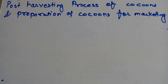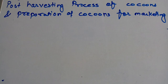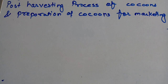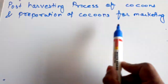Welcome students. In the last few videos we discussed about the different types of diseases which are caused to the silkworm larva. We also discussed about the life cycle, and for getting silk we are interested in the third stage, that is the pupal case of the silkworm. From this video, we start to study the post-harvesting process of cocoons and preparation of cocoons for marketing.